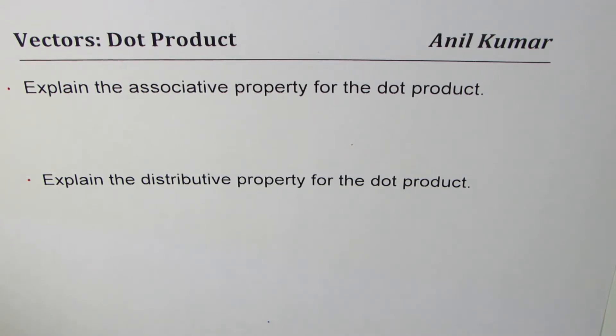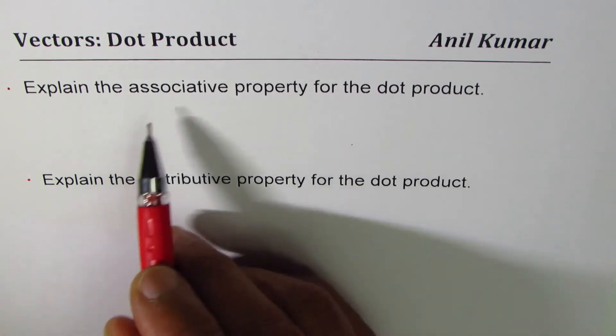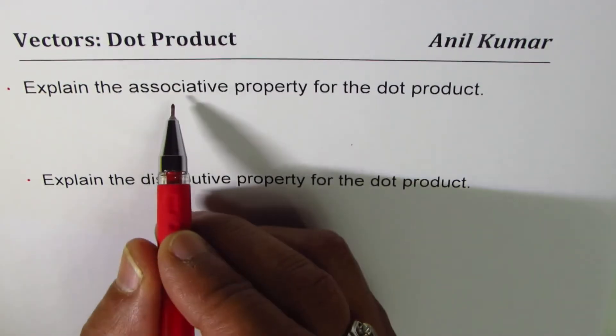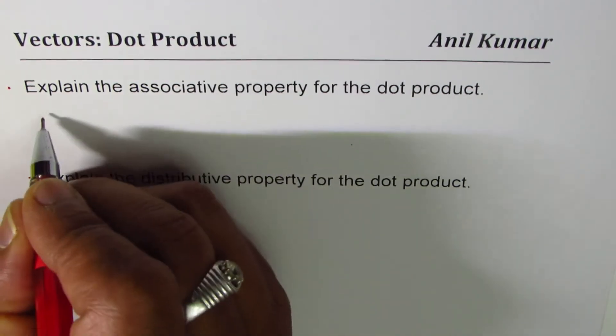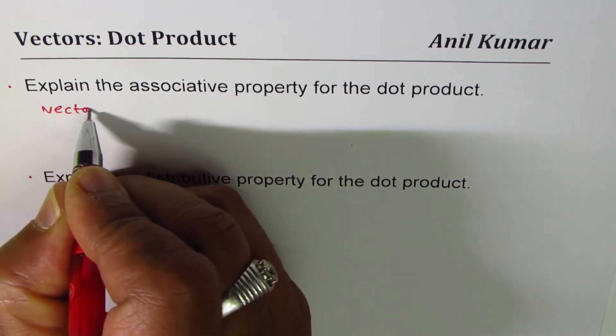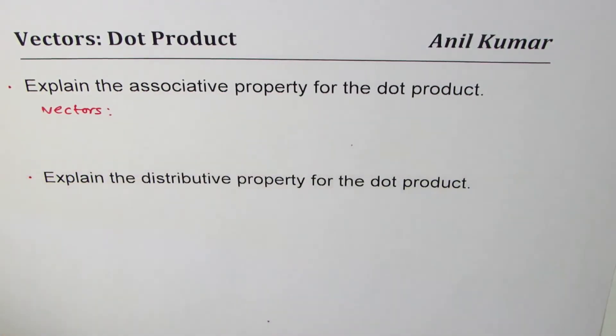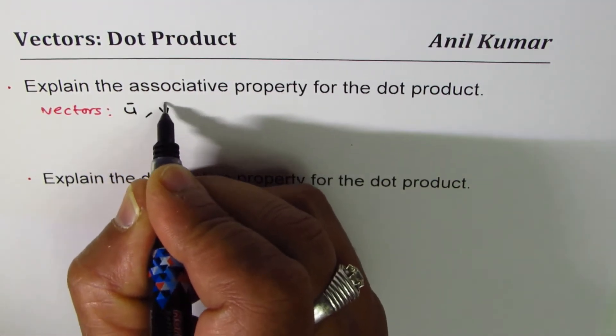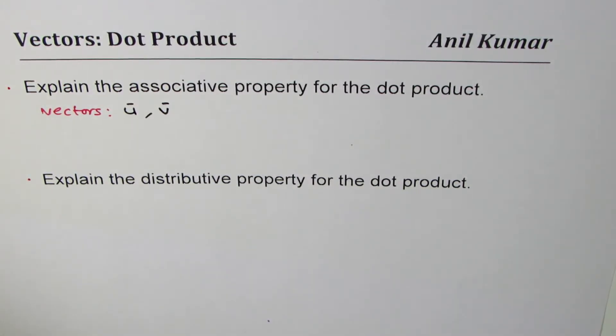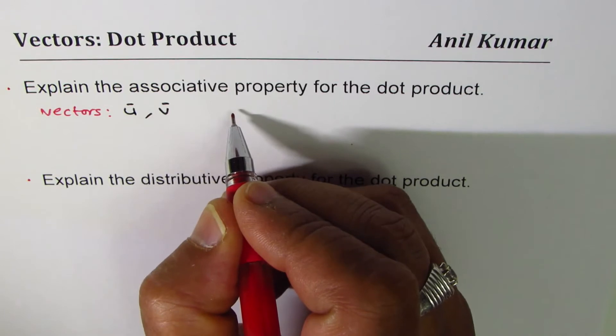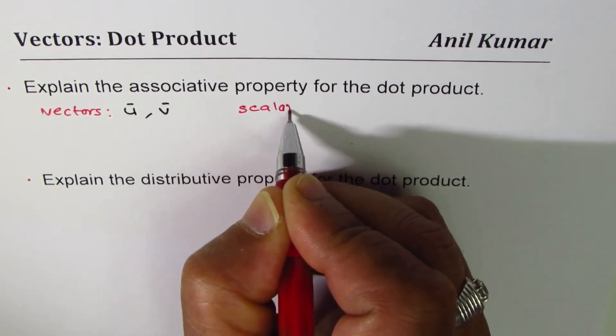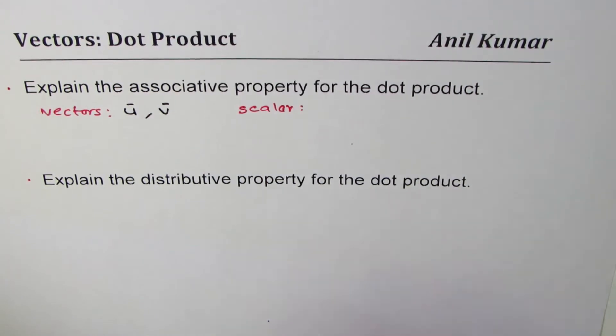When we talk about associative, we have three things. In this case, two of them are vectors - let's say we have vectors u and v. And what's the third thing? Well, the third thing is a constant, or a scalar, and let's say the scalar is k for us.